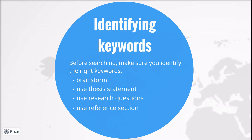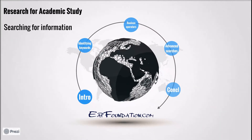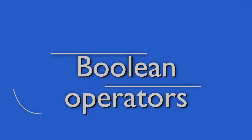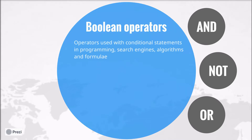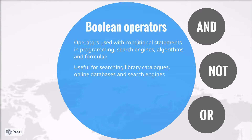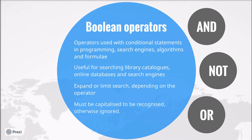Next, let's look at Boolean operators. What are Boolean operators? Well, these are operators which are used with conditional statements in programming, search engines, algorithms and formulae. In terms of searching for information, there are three main ones: AND, NOT and OR. Boolean operators are useful for searching not just search engines but also library catalogues and online databases, and they are used to either expand or limit the search depending on the operator. One important point about Boolean operators is they must be capitalized in order to be recognized, otherwise they will be ignored in the search.